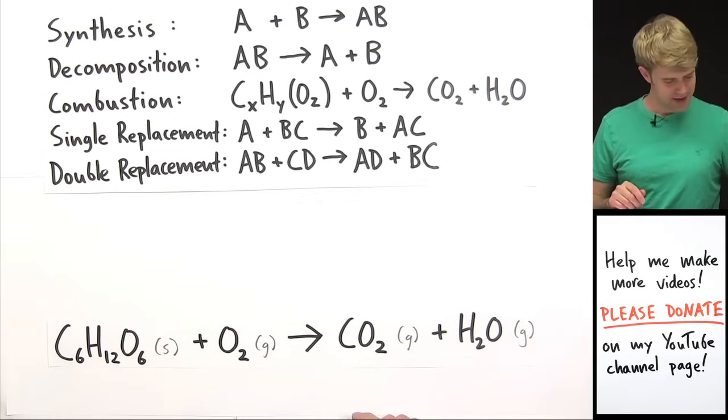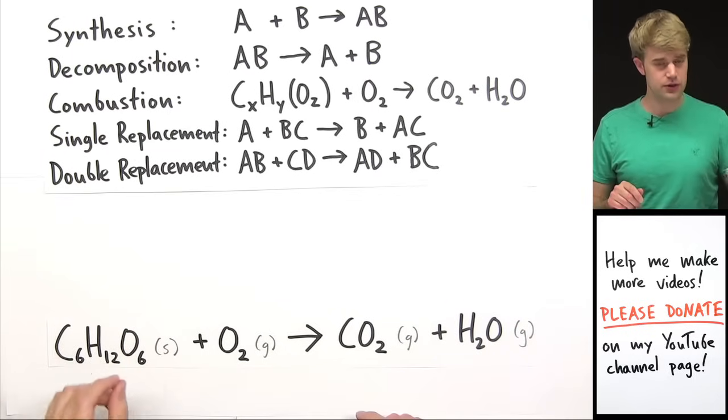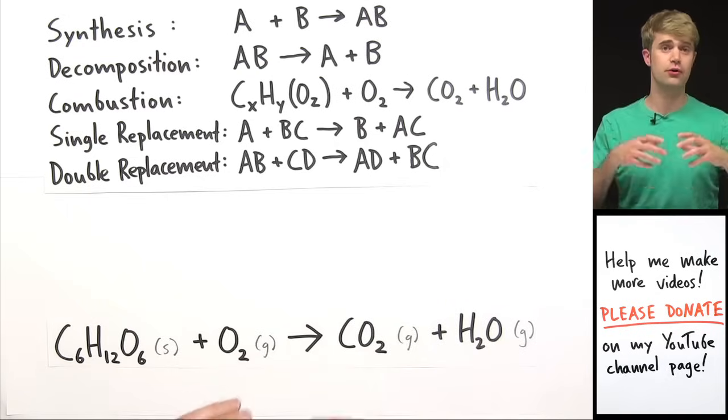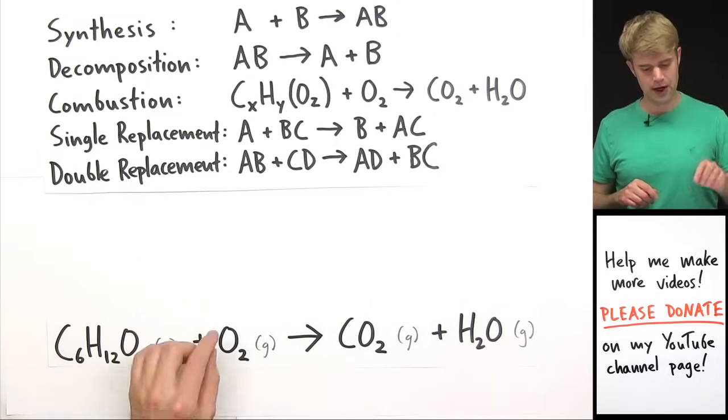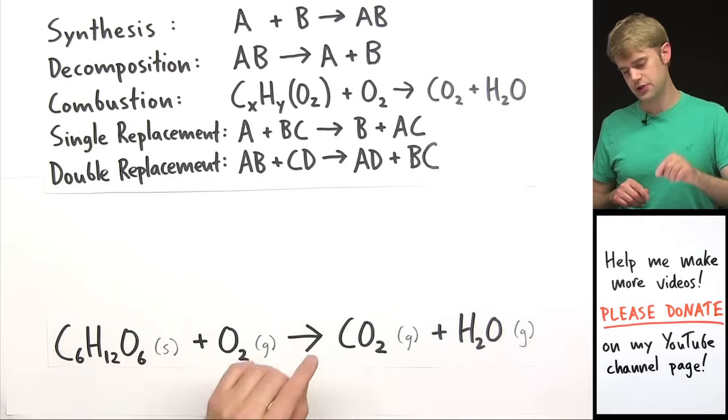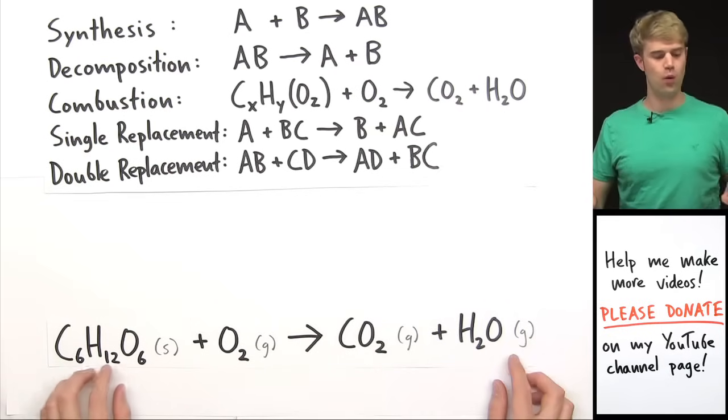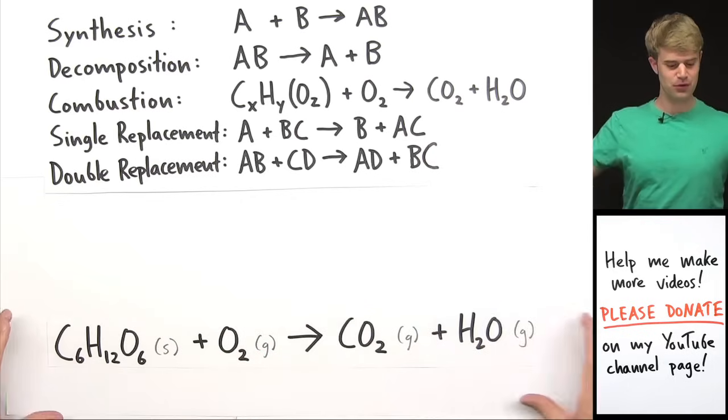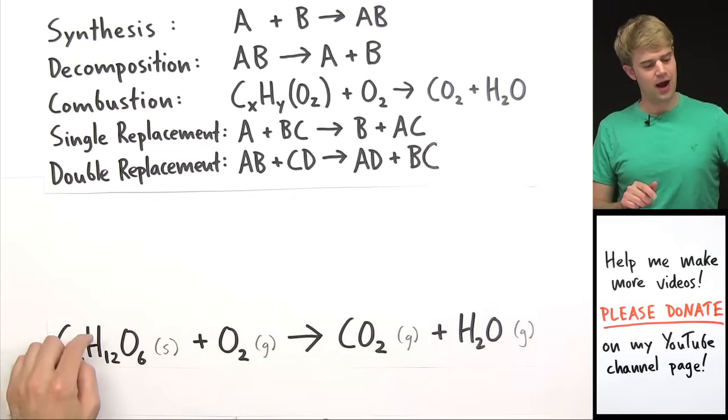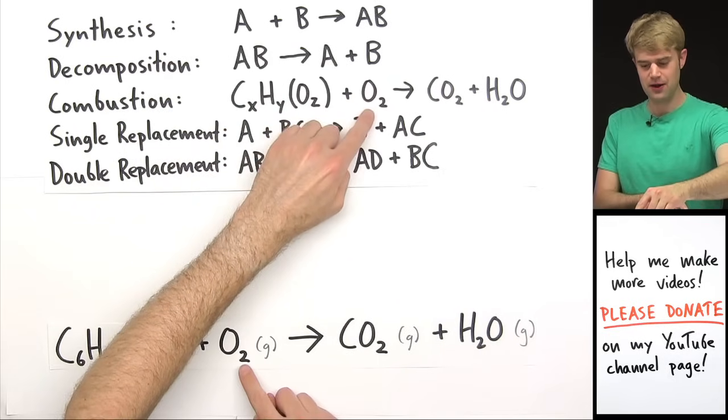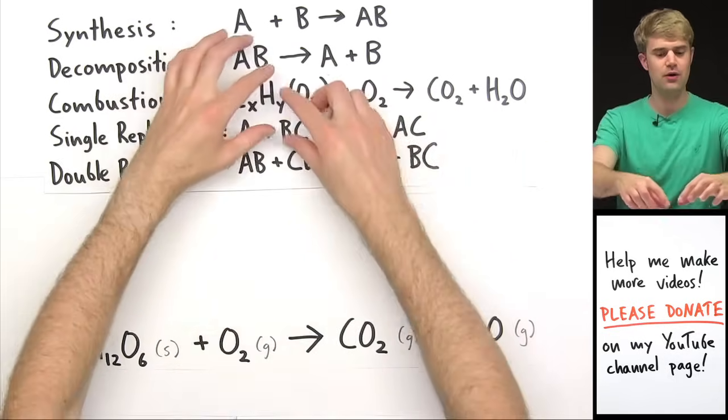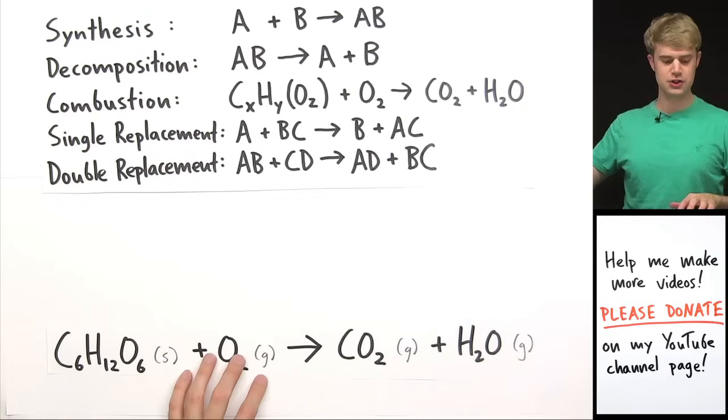Okay. Here's the last one. C6H12O6, which is the chemical formula for glucose. It's a sugar and food that you eat. Glucose combines with oxygen to give us carbon dioxide and water. All right. This should look pretty familiar. When we have something with carbon, hydrogen, and sometimes oxygen, and we combine it with oxygen, we get CO2 and H2O. That is an example of a combustion reaction.